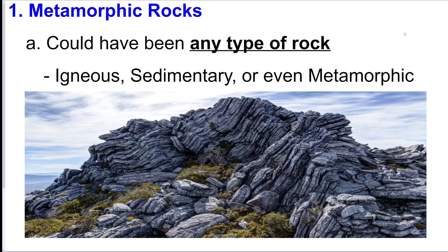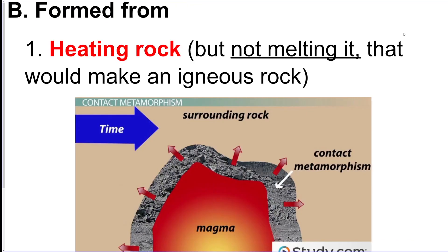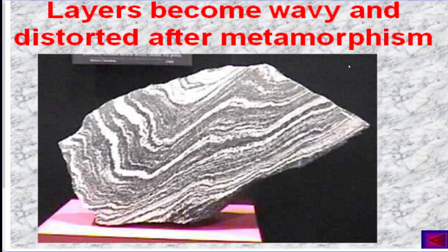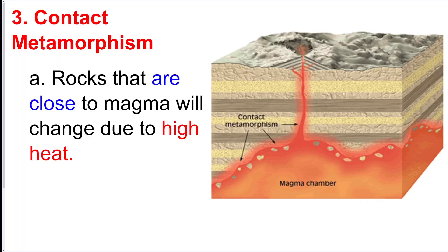The last type is metamorphic rock. Metamorphic rocks can come from any of the other types of rock as long as they're heated or pressurized. You want to heat them but not melt them — just enough to make them more pliable so the minerals can realign themselves. If you squeeze them, they become flattened and the minerals can line up by density, or you can get a wavy or distorted pattern. Contact metamorphism is when rocks are nearby a magma chamber and subjected to very high heat, causing them to change into metamorphic rocks.